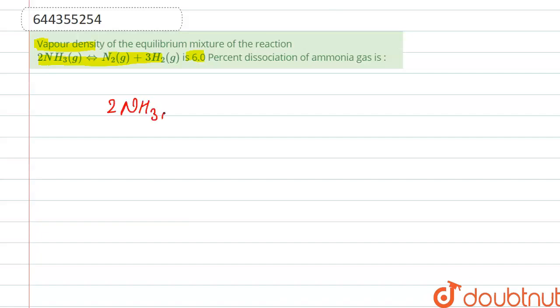We have to calculate the percentage dissociation of ammonia gas. The reaction is 2NH3 gas at equilibrium forms N2 and 3H2, where vapor density is given as 6.